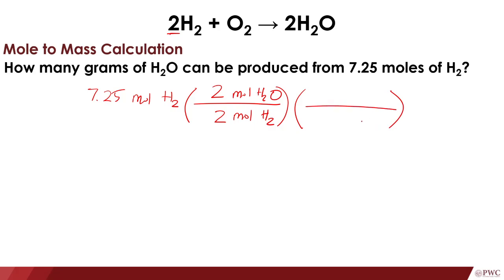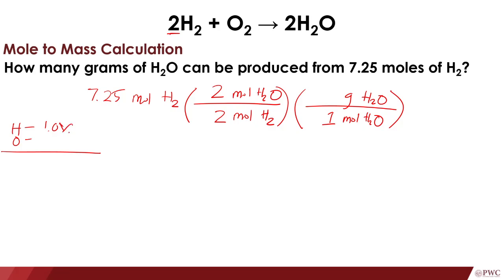Then after converting to moles of H₂O, we can convert to its mass in grams of H₂O. Now, 1 mole of H₂O is equal to how many grams? This is a conversion from mole to mass, so we need the molar mass of H₂O — that's hydrogen and oxygen: 1.01 times 2 equals 2.02, plus 16.00 times 1 equals 16.00. The molar mass is 18.02 grams per mole of H₂O.